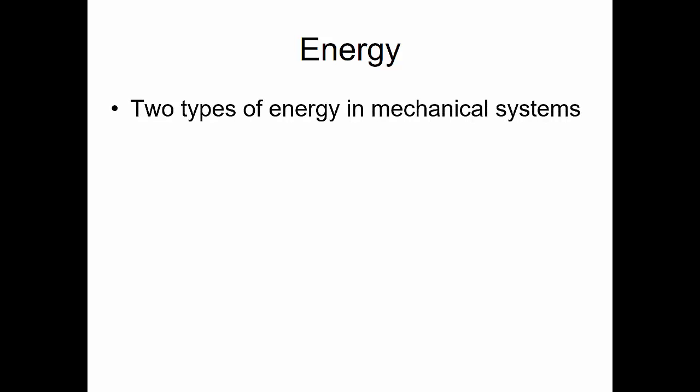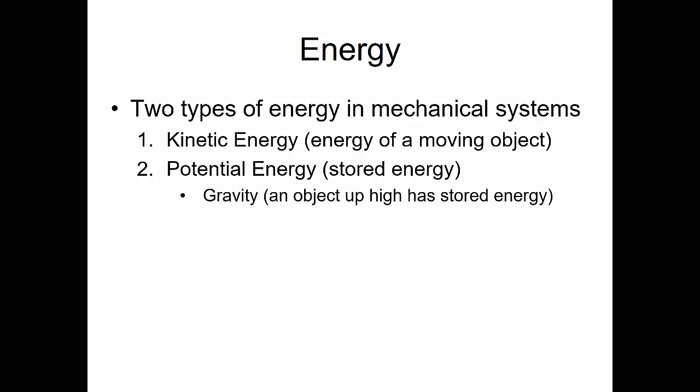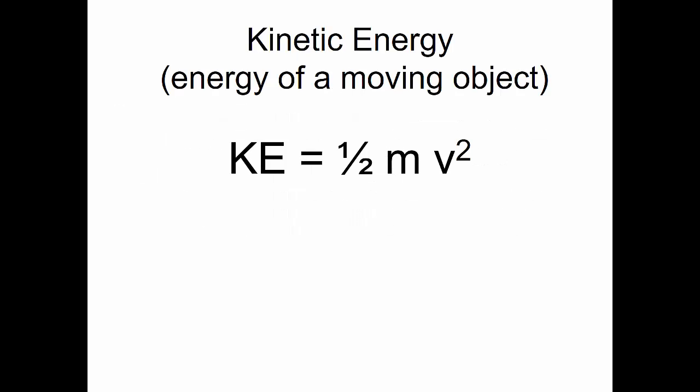Now let's talk about energy. There are two types of mechanical energy: kinetic energy, which is the energy of a moving object, and potential energy, or stored energy, that could be used later or converted to kinetic energy. Gravity is one source of potential energy — an object up high has stored energy. A spring is another source of potential energy; a compressed or stretched spring has stored energy. For kinetic energy, we use KE equals one-half mass times velocity squared.